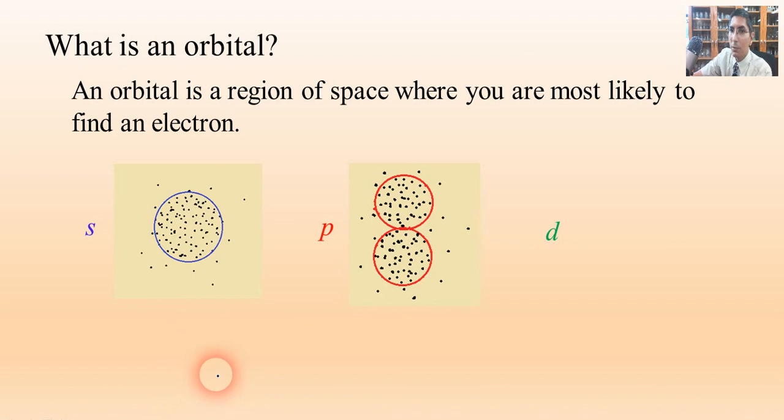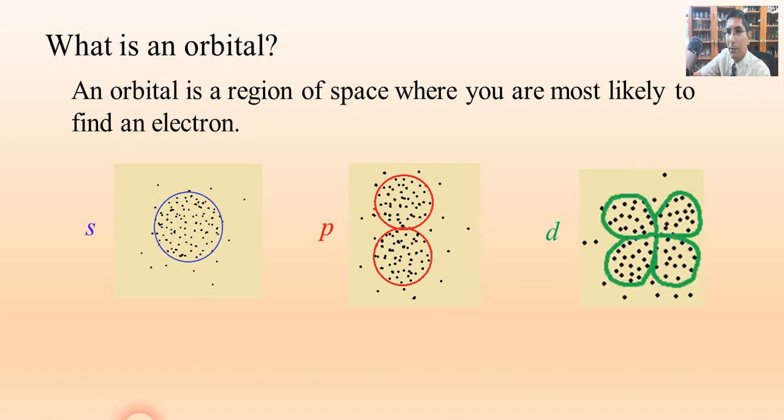And then we can look at a d orbital. And so if we look at d orbitals, once again, this is one electron in a d orbital. And we just plotted it, just took a bunch of different snapshots as to where that electron might be at different points in time. And this time, it looks more like a butterfly or perhaps a four leaf clover. And so those are the shapes of the orbitals. We say s is spherical, p has this dumbbell or kind of a figure eight shape, and then a d orbital looks like a four leaf clover or perhaps a butterfly.